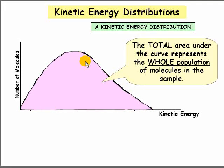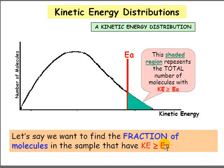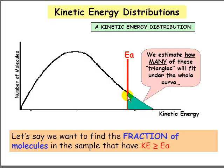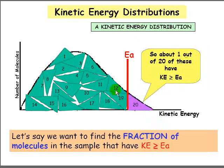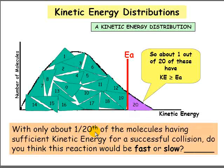The total area under the curve represents the total population of the molecules in the sample. To find the fraction of molecules with kinetic energy greater than or equal to EA, we can estimate how many of these little triangles would fit under the whole curve. With a little imagination, we can see that about 20 of these fit under the whole curve. So about 1 in 20 of the molecules have kinetic energy greater than or equal to EA, meaning sufficient kinetic energy for a successful collision.